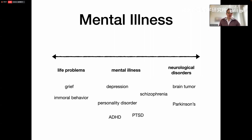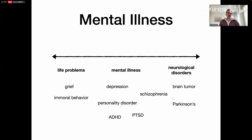There's a spectrum. A lot of the prototypical mental illnesses lie somewhere in between life problems and neurological disorders — such as depression, personality disorders, and schizophrenia — but they also exhibit features that you would find in life problems or neurological disorders. It's really quite hard to pin down where exactly to draw the boundaries, but for current purposes we can say they are somewhere in the middle of the spectrum.